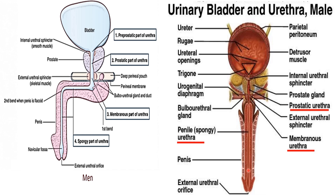In this image, you can see more clearly the different parts. The external urethral orifice is visible, as is the penile portion, within which lies the penile urethra or spongy urethra. The membranous urethra is surrounded by the external urethral sphincter, with the bulbourethral gland on either side. Above that, the prostatic urethra is surrounded by the prostate gland, and within the internal urethral sphincter lies the pre-prostatic urethra.